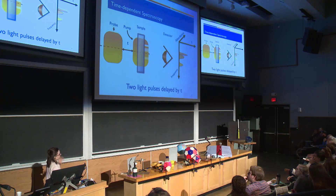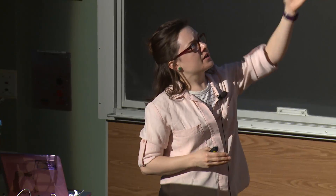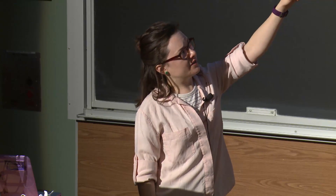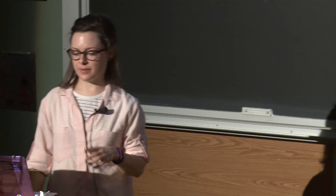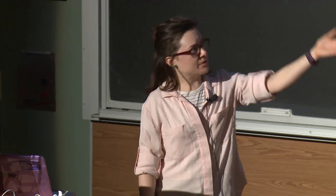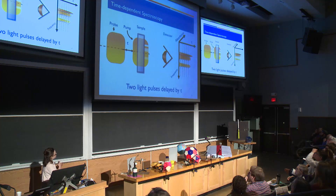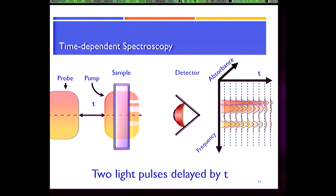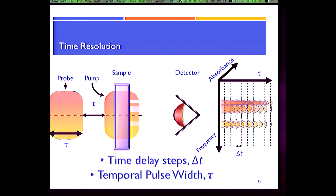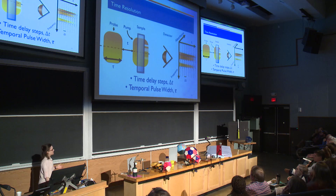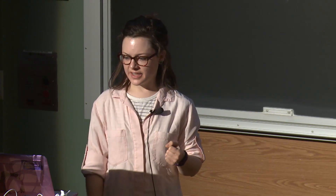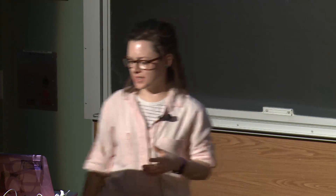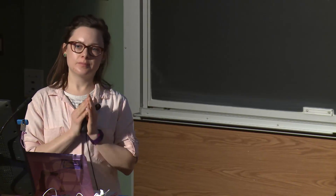The first pulse, the pump, will excite our system to some state, we'll wait some time t, and then have the second pulse, the probe, interact with our sample, and we'll watch how the probe is interacting with our sample. By doing this type of spectroscopy, we can see where transitions are decaying, and we might be able to learn something about energy transfer or coupling between transitions. One of the really important aspects of any time-resolved spectroscopy is time resolution — the rate-limiting thing in our spectroscopy is the temporal pulse width. So we need to have as short pulses as possible.